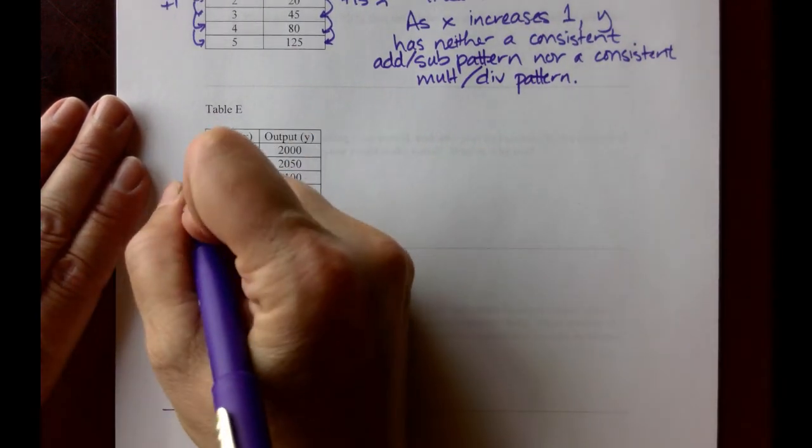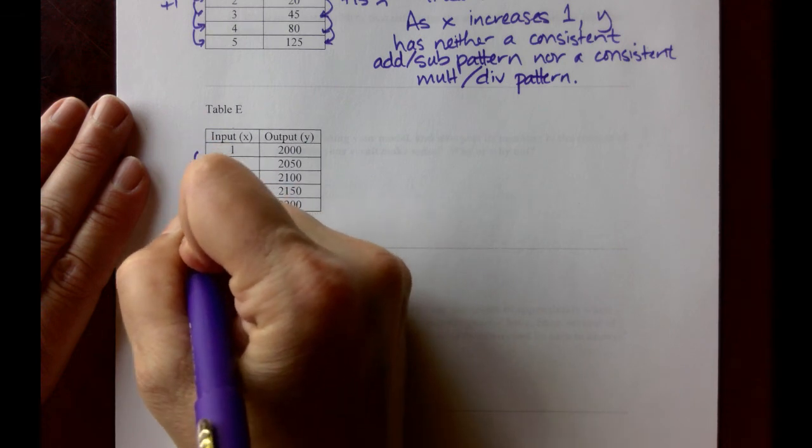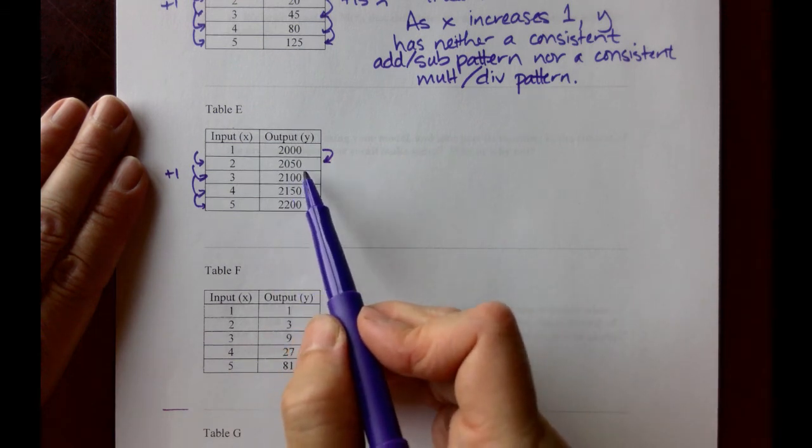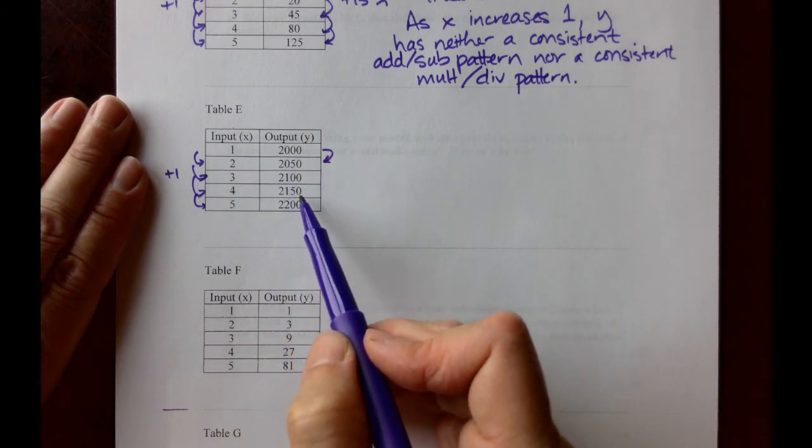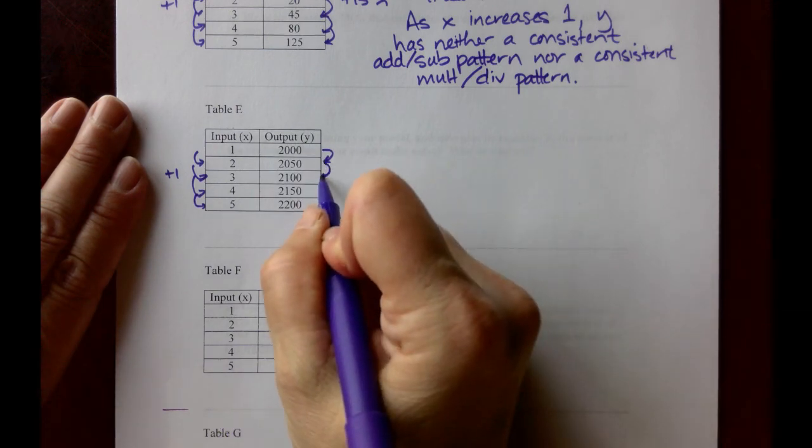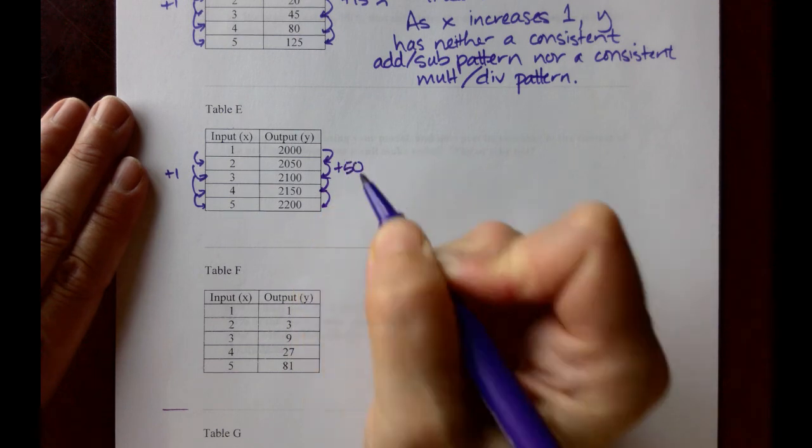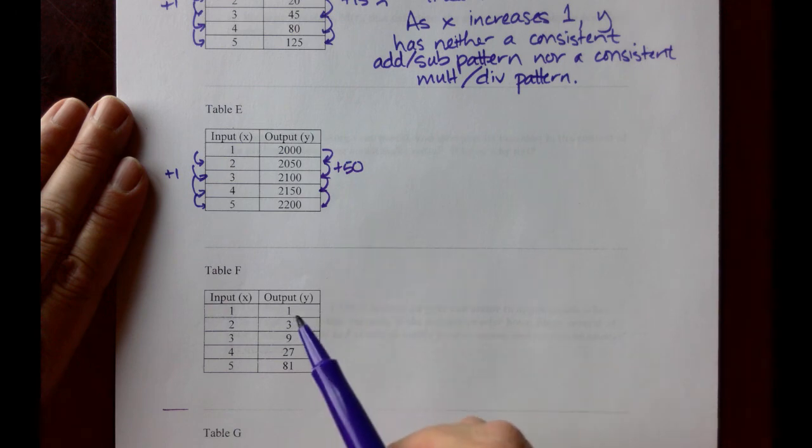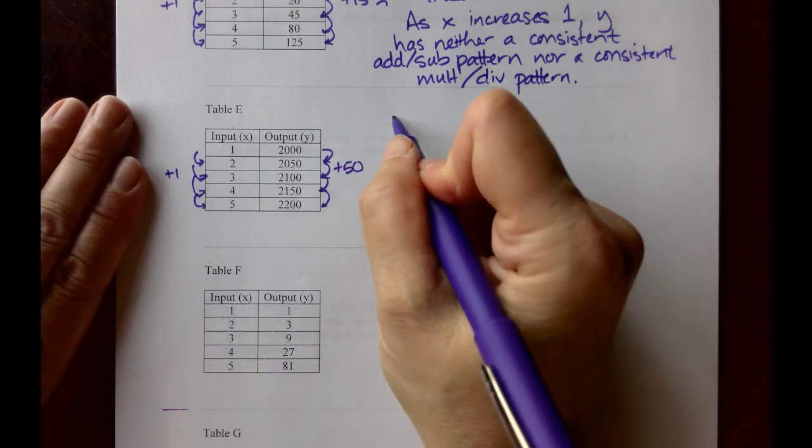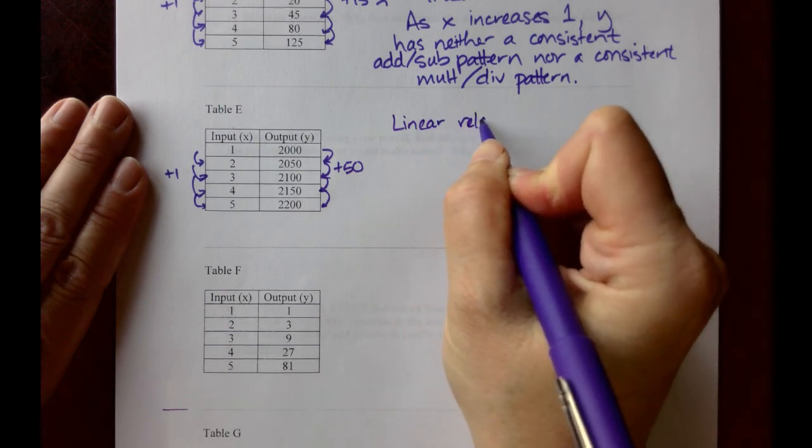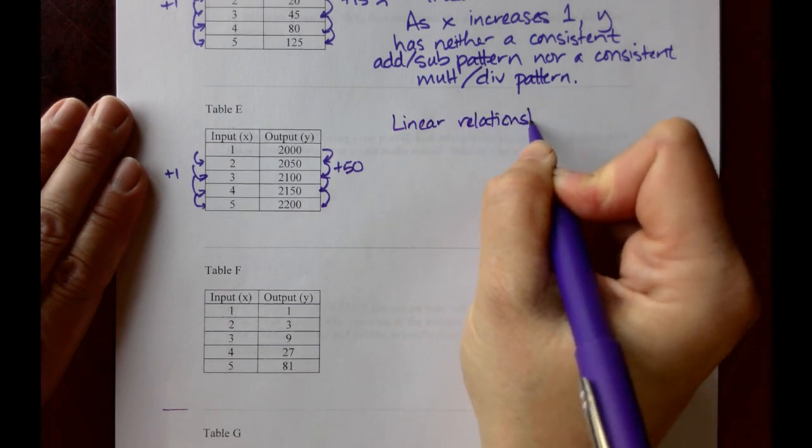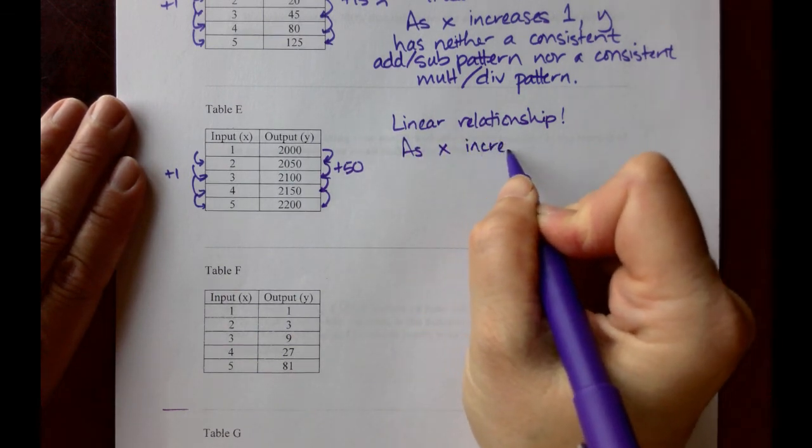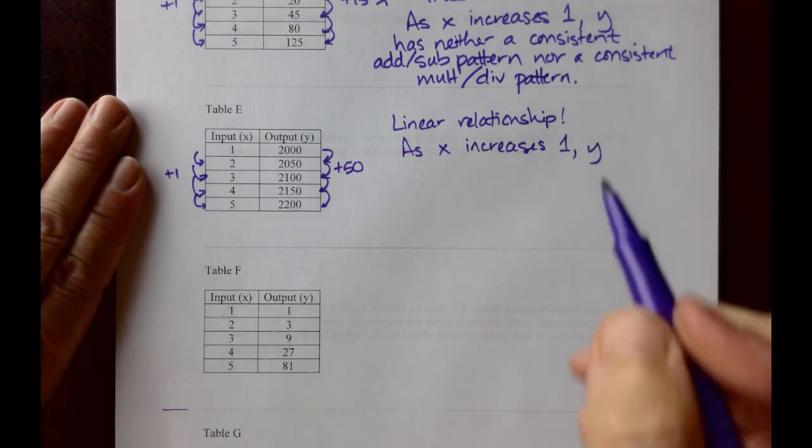Table E, the x's are increasing by 1. The y's, they start at 2,000, they go to 2,050, and then to 2,100, 2,150, and then 2,200. These are increasing by 50 each time. We have addition of 1 in the x's, and addition of 50 consistently in the y's, and that means we have a linear relationship. The reasoning here, as x increases 1, y increases 50.